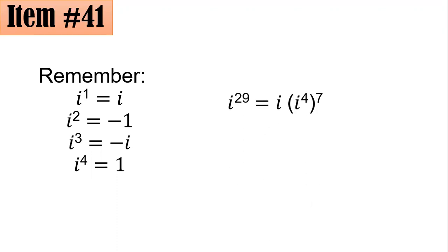If you have i raised to 29, remember that after i to the fourth it repeats every fourth. That's why I have here i to the fourth. But to be close to 29, if I divide 29 by 4, it gives me 7 point something.